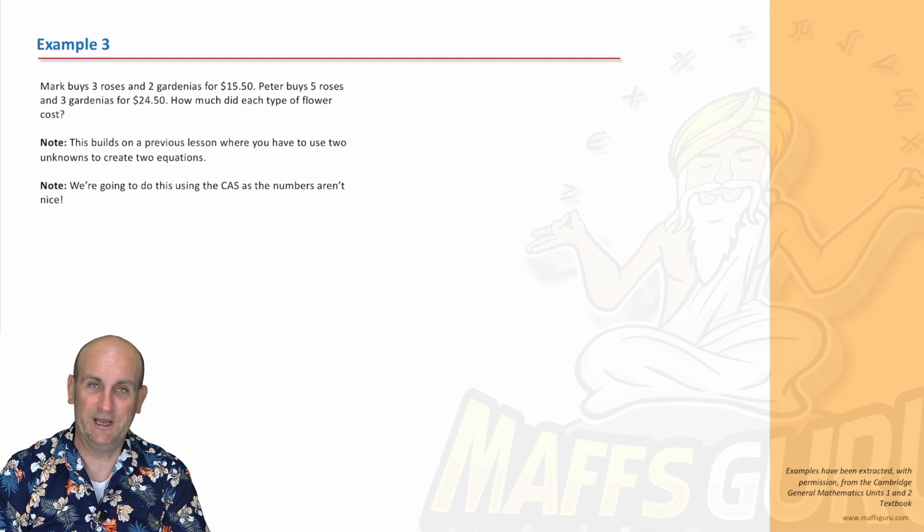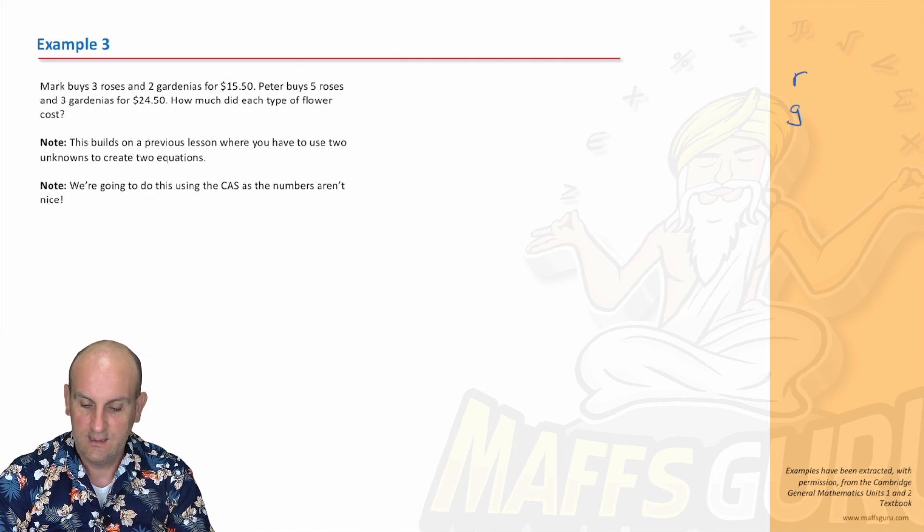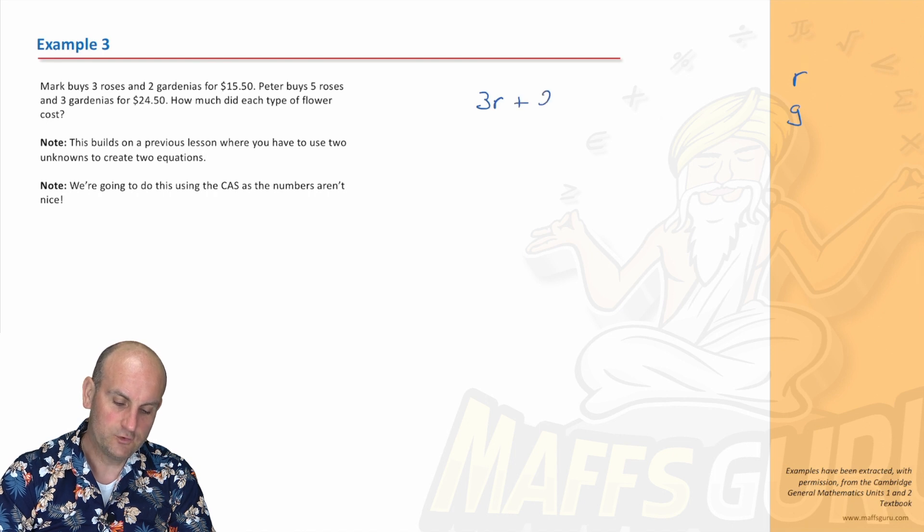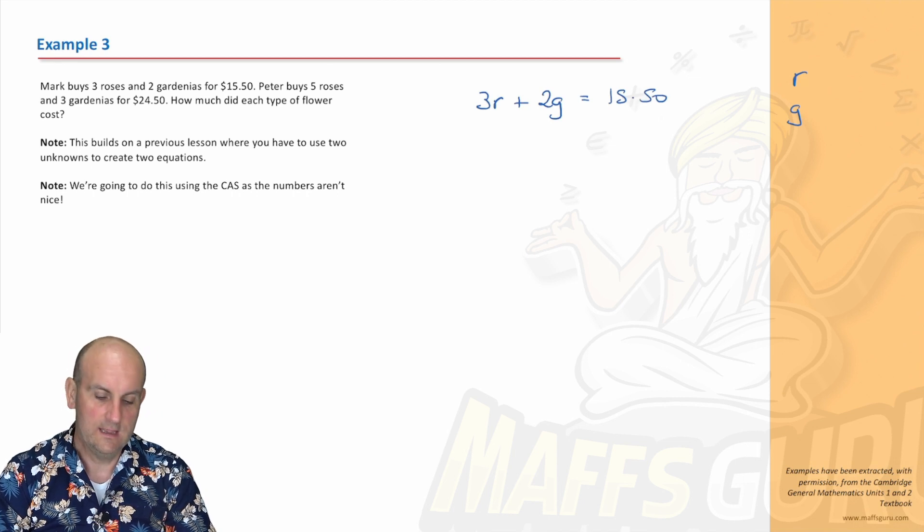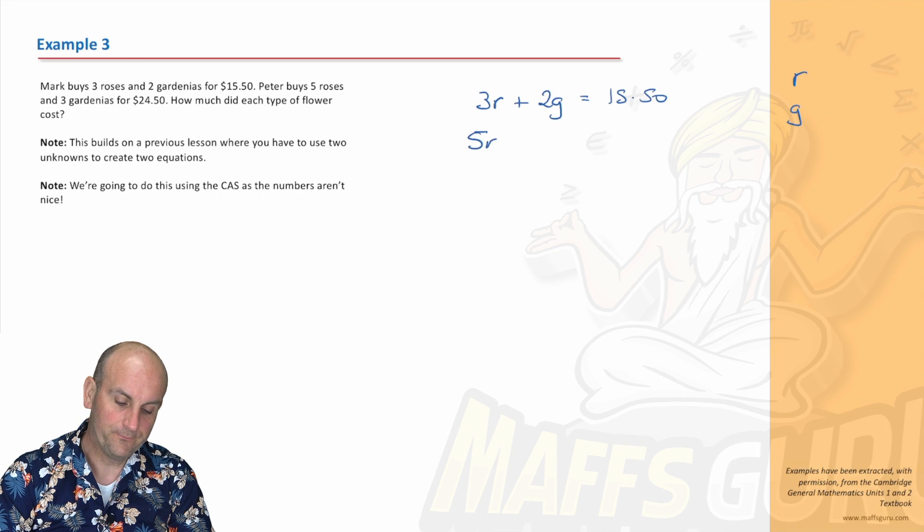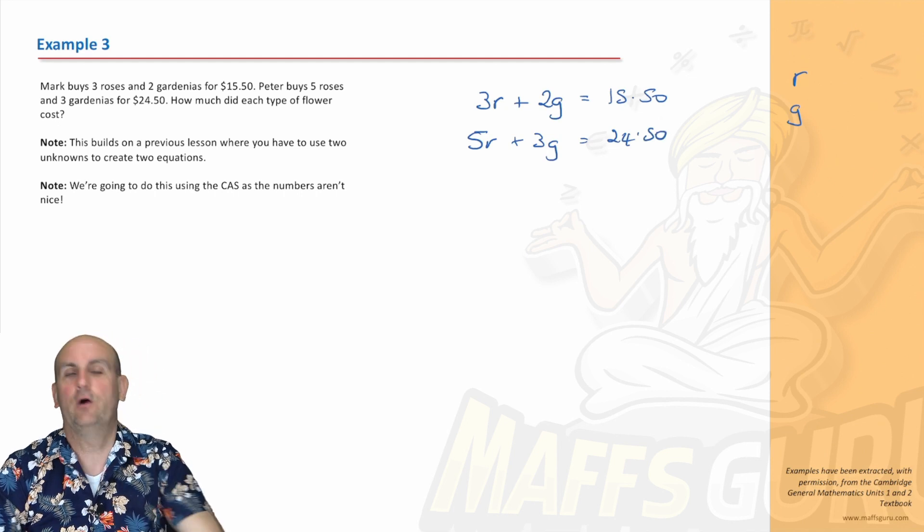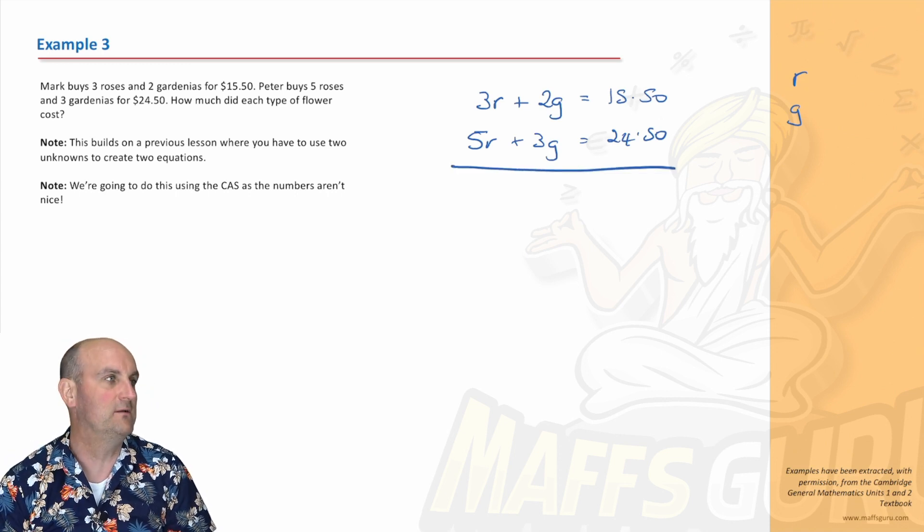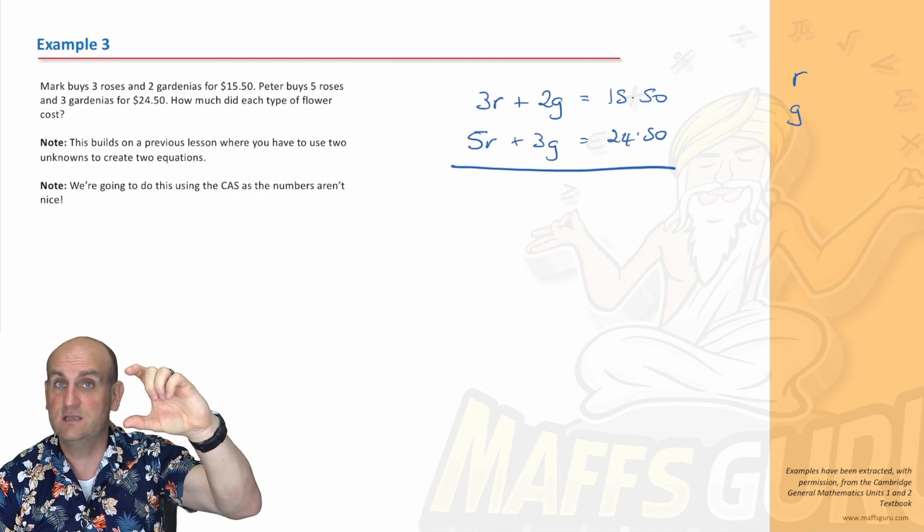Last example. Mark buys three roses and two gardenias. Guess what letters we're going to use for this example? R and G. So Mark buys three roses and two gardenias for $15.50. Peter buys five roses and three gardenias for $24.50. How much did each type of flower cost?